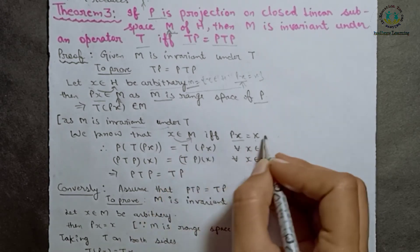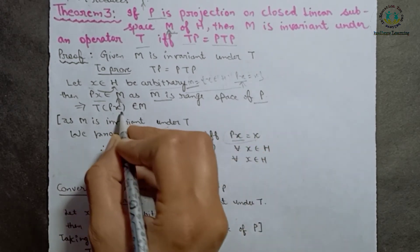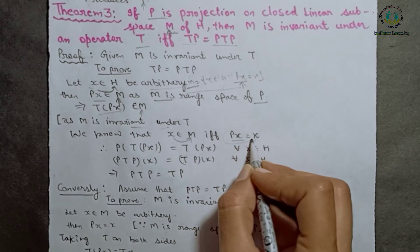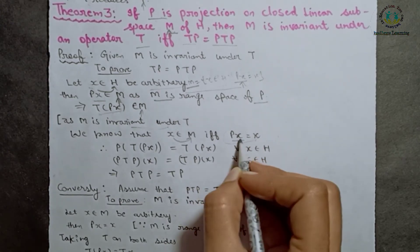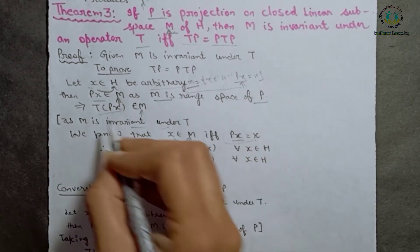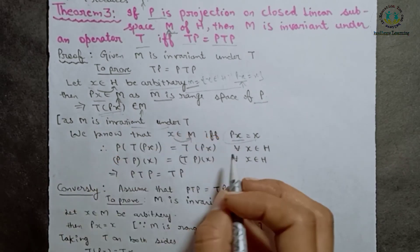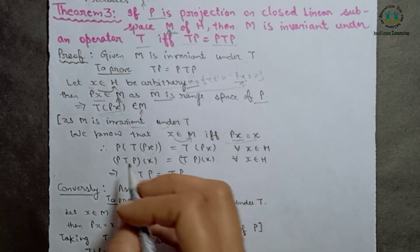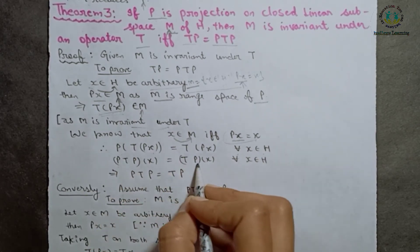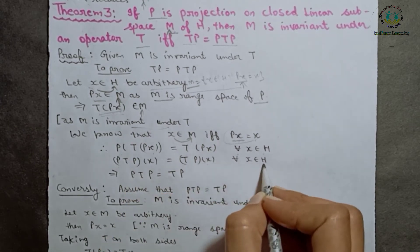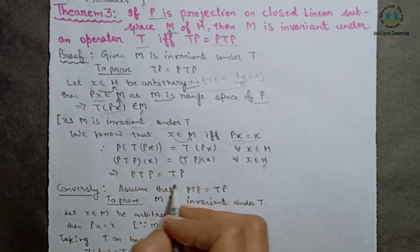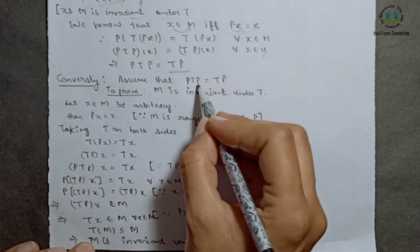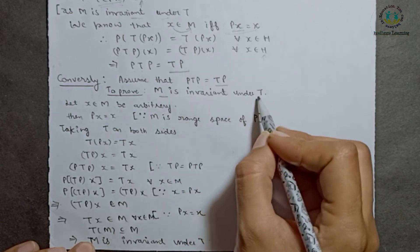Using the definition of range space, x belongs to M if and only if Px equals x. Since T(Px) belongs to M, applying P to it gives P(T(Px)) equals T(Px). So P(TPx) equals TPx for every x in H. Therefore PTP of x equals TP of x for every x in H, that is PTP equals TP.